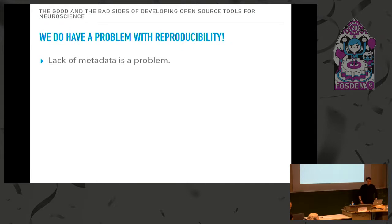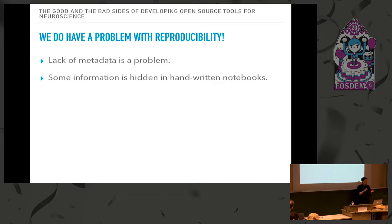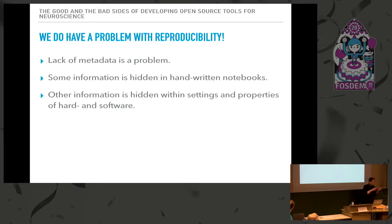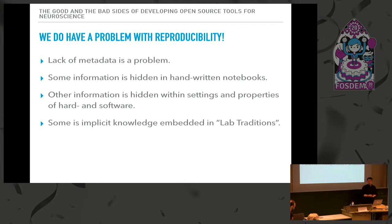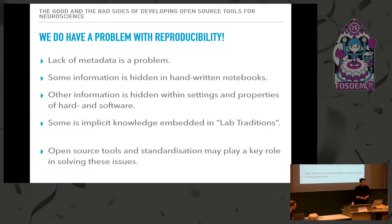We do have a problem with reproducibility in science. It seems that information — background information, metadata, data about data — is the problem. Some information is hidden in handwritten notebooks. Other information is hidden within settings and properties of the used hardware or software. Some is implicit knowledge hidden in lab traditions that doesn't even show up in lab books. I think open source tools and standardization might play a key role to solve these issues and overcome this reproducibility crisis.